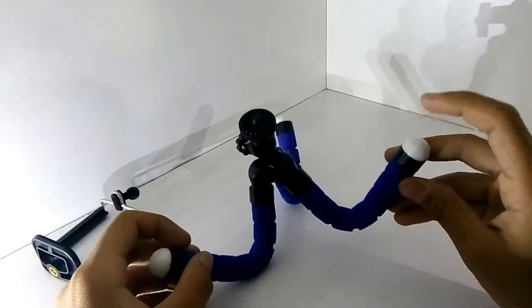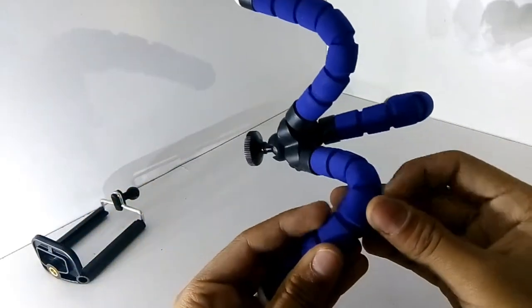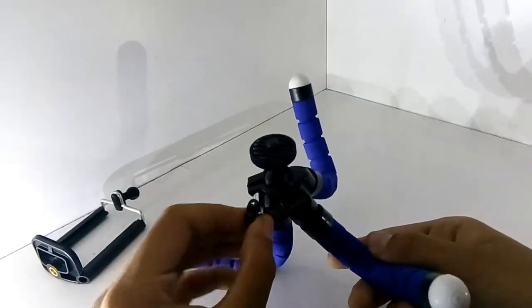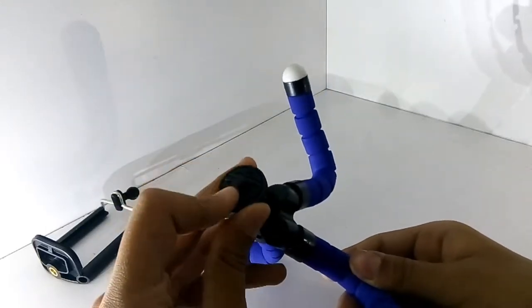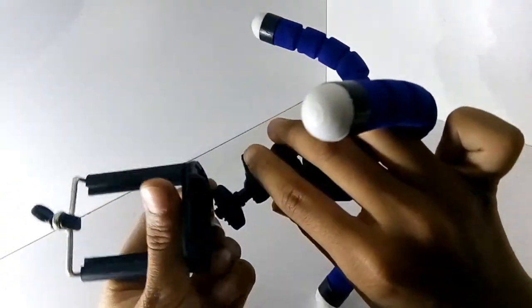These are the grips to hold your mobile. This is a velvet finish as they had told. This is a ball, 360-degree ball head, and this is also another grip. Now we will attach the mobile holder.